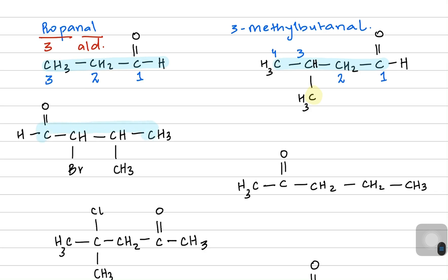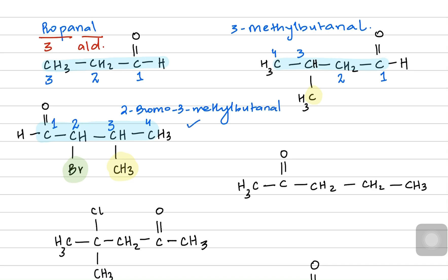Moving on, this next structure has four carbons in the main chain. There are two substituents: one on carbon three which is a methyl group, and the other on carbon two which is a bromo. We name bromo first because it starts with the letter B — so 2-bromo, then 3-methyl, then butanal. The full name is 2-bromo-3-methylbutanal.